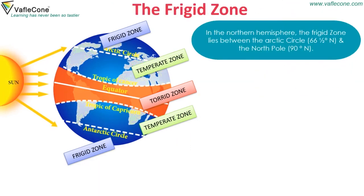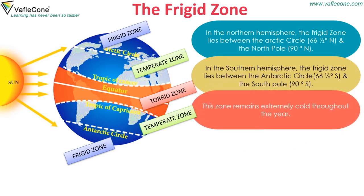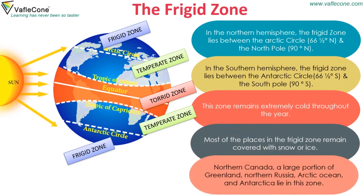The frigid zone: in the northern hemisphere, it lies between the Arctic Circle (66.5°N) and the North Pole (90°N). In the southern hemisphere, it lies between the Antarctic Circle (66.5°S) and the South Pole (90°S). This zone remains extremely cold throughout the year, with most places covered with snow or ice. Northern Canada, a large portion of Greenland, northern Russia, the Arctic Ocean, and Antarctica lie in this zone.